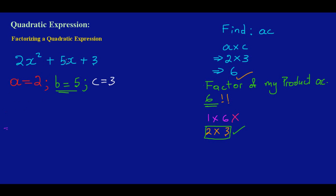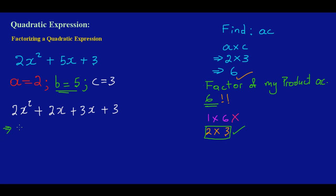So what I'll be doing now is rewriting this and expanding 5x into 2x plus 3x. What I have now is 2x squared, and I'm using my factors to replace 5x — I'm going to have 2x plus 3x, plus 3. If you notice, in the original I had 5x, and if you add 2x plus 3x you get back your 5x. The reason I expanded 5x is so that I can factorize by grouping.